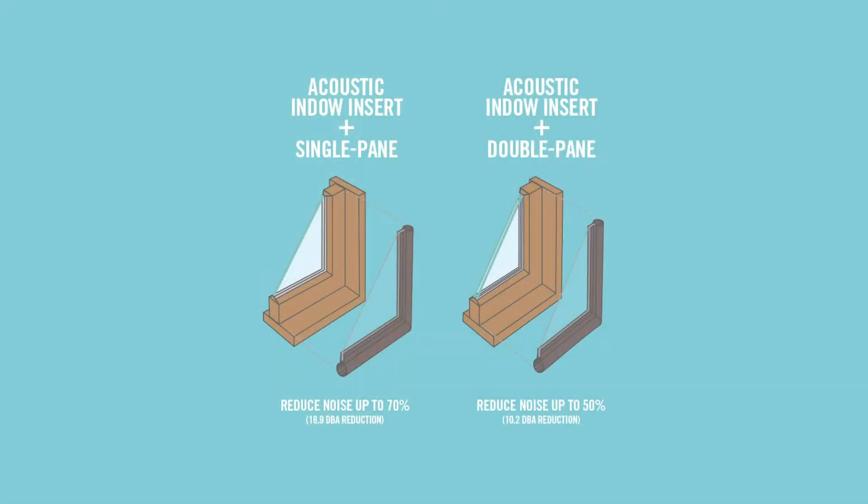So when comparing STC ratings of noise-reducing products, you need to make sure that the STC rating you're looking at is compared against the same assembly. For instance, a single-pane window with a three-inch air gap versus a double-pane vinyl window with a one-and-a-half-inch air gap to the secondary glazing product — if these are not the same, your STC comparisons are not of the same assembly and would not carry as much weight.